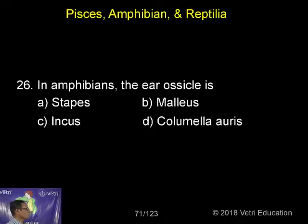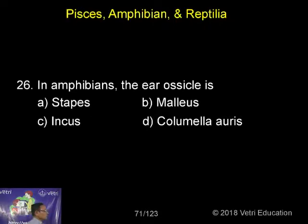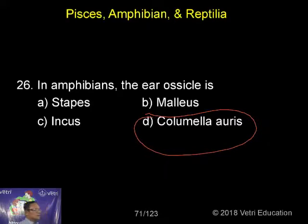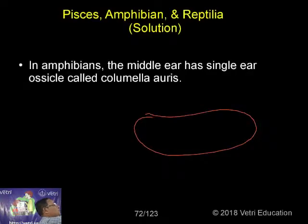In amphibians, there is only one ossicle in the middle ear, whereas we humans have three ossicles: malleus, stapes, and incus. In the case of the frog, the single ossicle found in the middle ear is called the columella. So the columella is a single ossicle found in the middle ear of frogs, while humans have three ossicles.